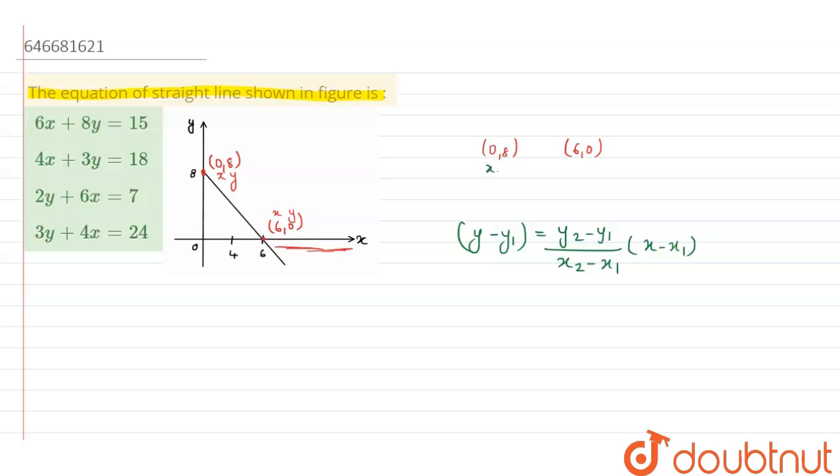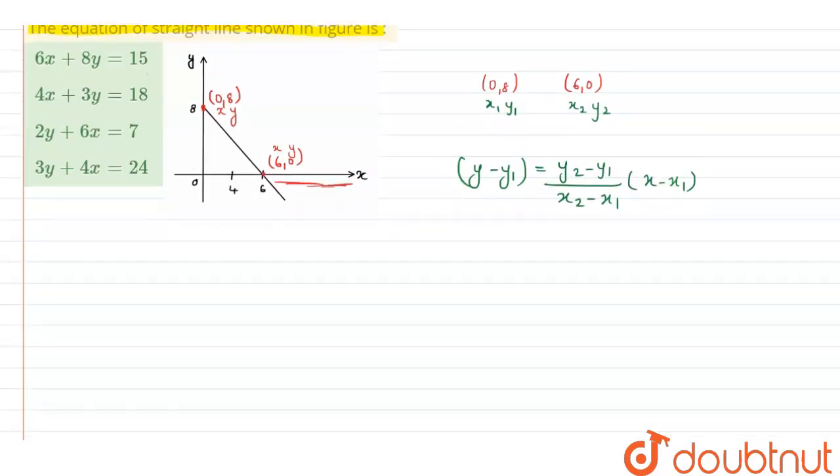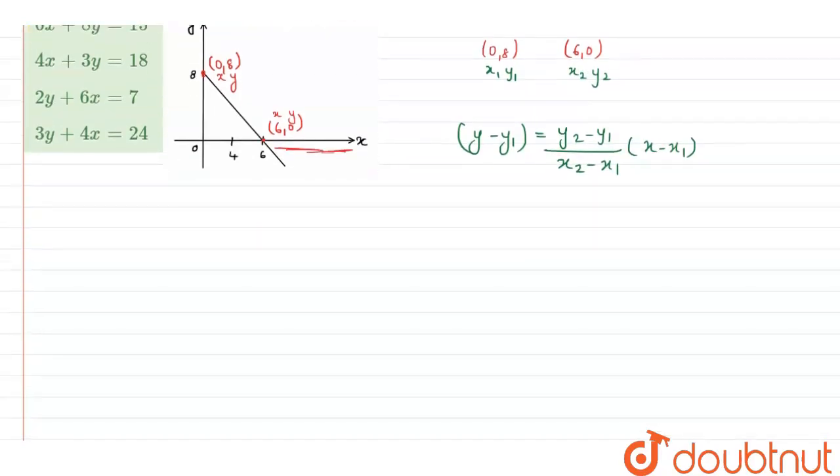In this coordinate we can say that this is x1, this is y1, and this is x2, this is y2. Now if we put the values we will get y minus 8, that is the value of y1 that is 8, is equal to y2 that is 0 minus y1 that is 8